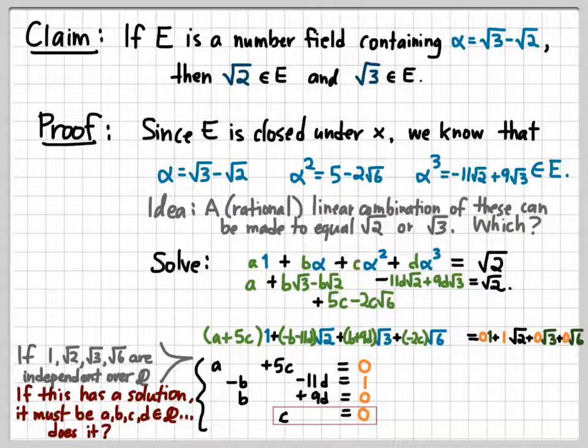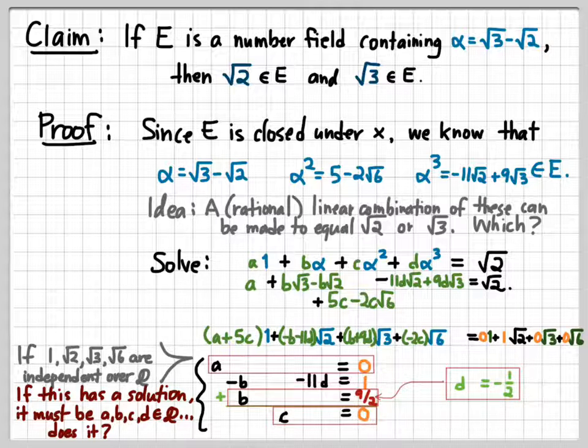Well, since -2c = 0, we get that c must be 0 pretty quickly, and if c is 0, plugging that into the first equation shows us that a has to be 0 as well, so we're halfway there. Now taking the second and the third equations and adding them together to eliminate b, we find out that -2d = 1, and therefore d = -1/2. And if d = -1/2, plugging that into the third equation gives us b - 9/2 = 0, whence b = 9/2.